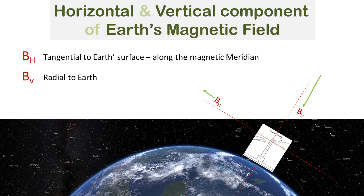When a dip meter is placed on the surface of the earth, the magnetic needle points in the direction of the earth's magnetic field. BH is tangential to the surface of the earth and aligned with the magnetic meridian. BV is radial and pointing to the center of the earth.